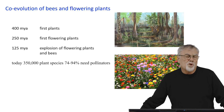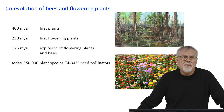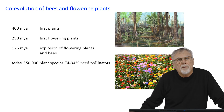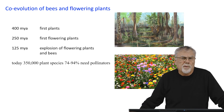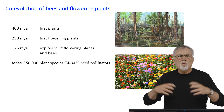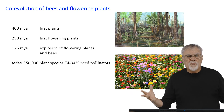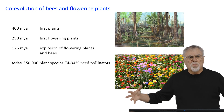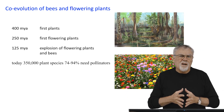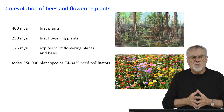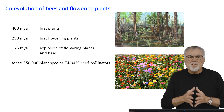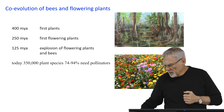About 400 million years ago, the first plants invaded the terrestrial habitats. About 250 million years ago, we had the first flowering plants. Then about 125 million years ago, there was an explosion of flowering plants and bees — known as an adaptive radiation, an explosion of new species. Today, we have an estimated 350,000 recognized plant species, and about 74 to 94 percent of them need pollinators.